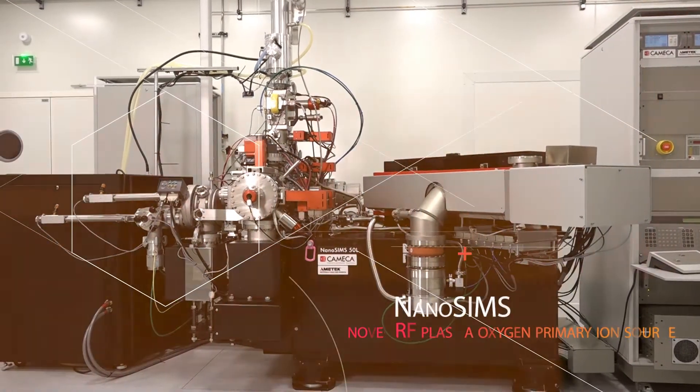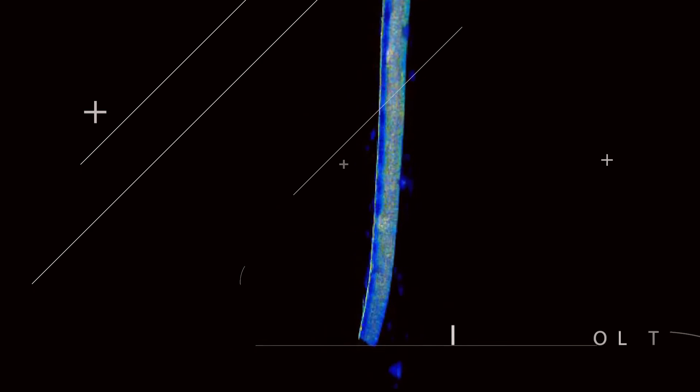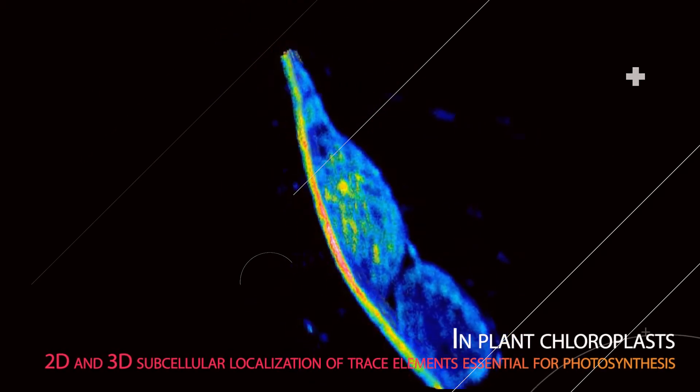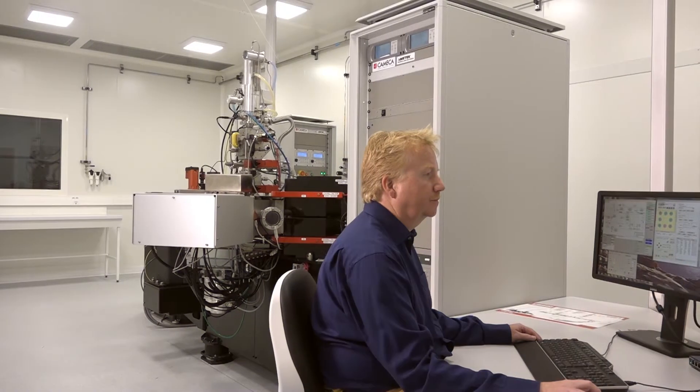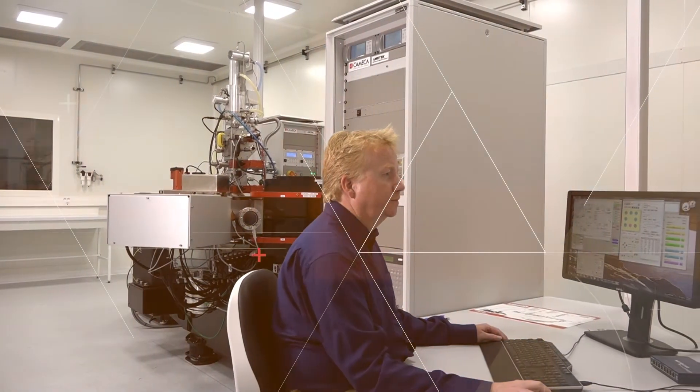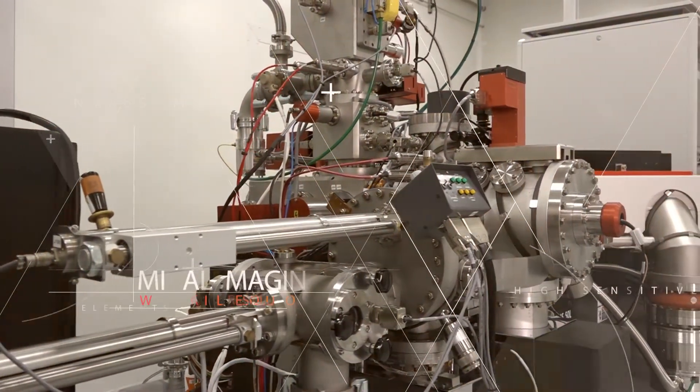Nanosecondary ion mass spectrometry, also called nanoSIMS, allows chemical imaging at a sample surface down to a resolution of 50 nanometers combined with high sensitivity. NanoSIMS can be regarded as a scanning ion microprobe or a chemical microscope.